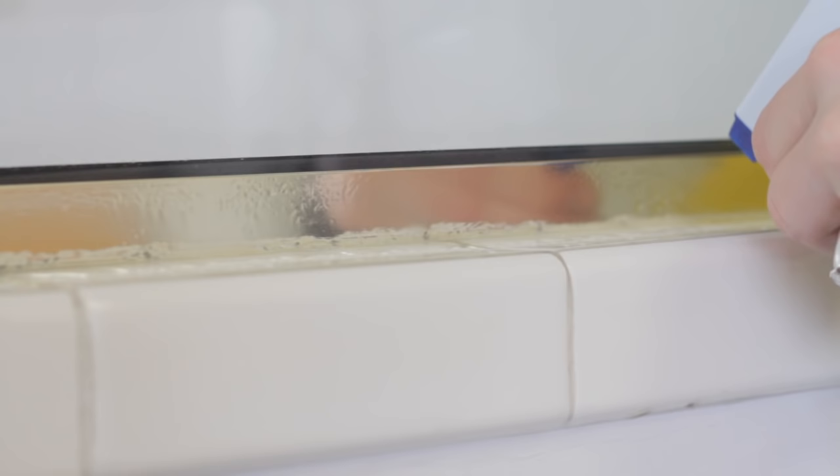Then, you let it soak and let it sit. You can do this for maybe five or ten minutes and you'll actually visibly start to see all of the black and dark spots going away. That's actually the mold and mildew dying.